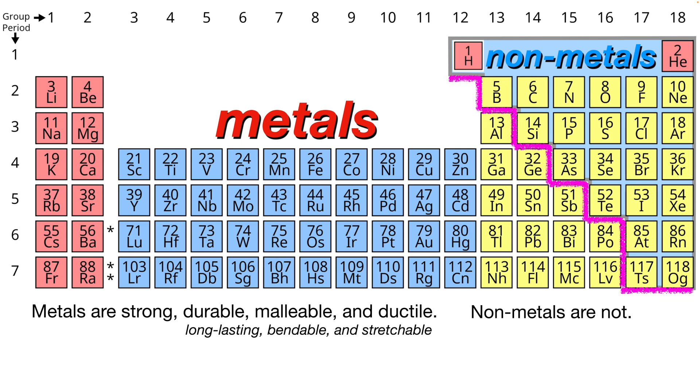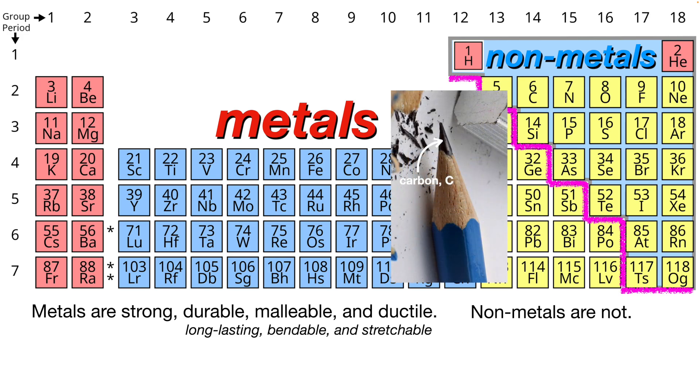Non-metals are not any of those things. They are easily worn away. They're not durable. You can't really bend them or stretch them without breaking them. They easily break. They are brittle. Like in a pencil, this is a form of carbon here. It's easily flaked off when you write, and it breaks pretty easily too. Graphite.